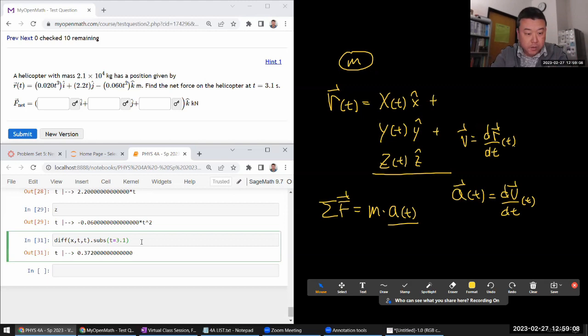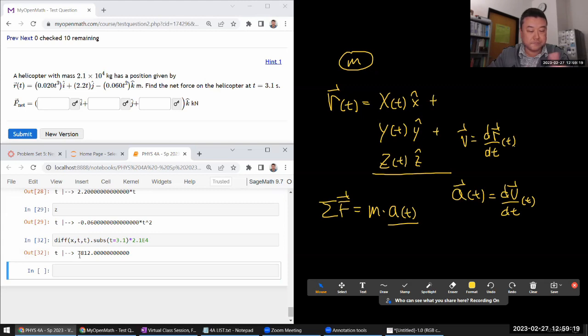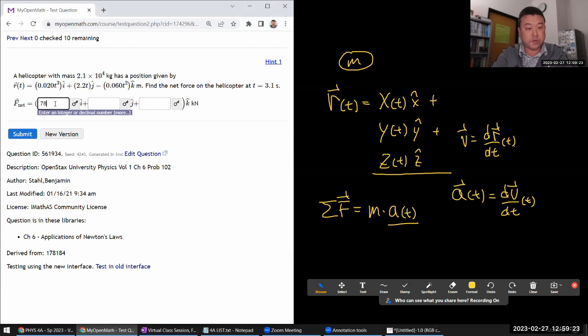And I am going to multiply this number by the mass that we are given, 2.1 times 10 to the power of 4. So, ignoring the left-hand side, which looks off, it should be 7812 newtons for the x component of the force.